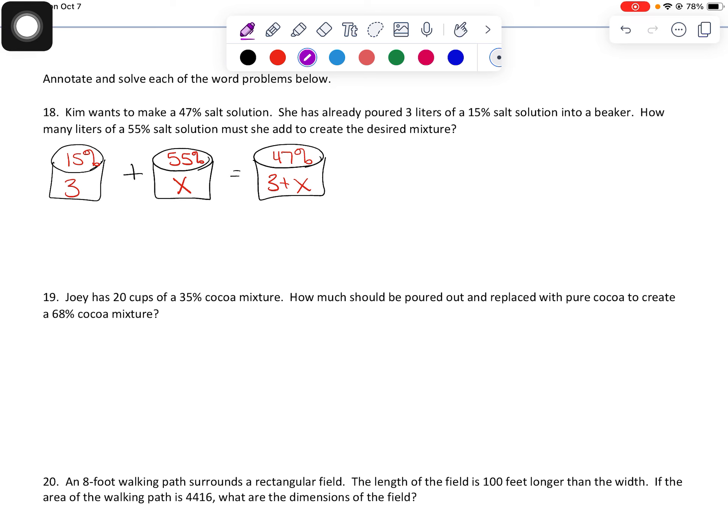For me, I like doing this organization because now the equation is going to fall right out. This is going to be 15 times three plus 55x is equal to 47 times three plus x. So 15 times three makes 45 plus 55x equals 47 times three, that's 141 plus 47x.